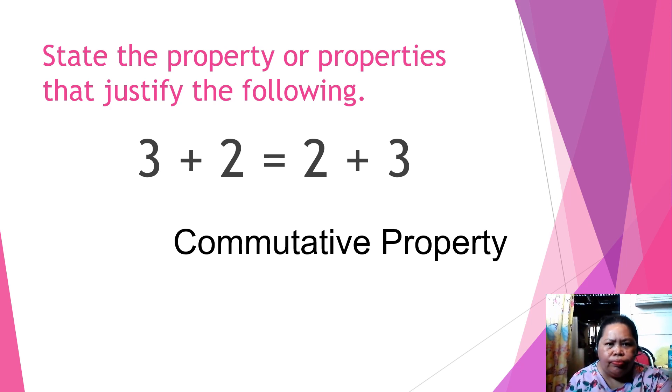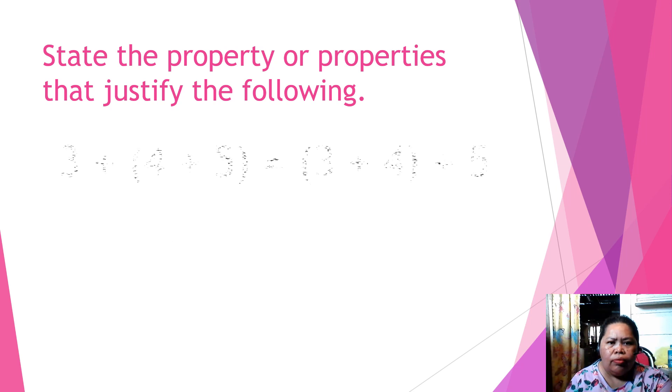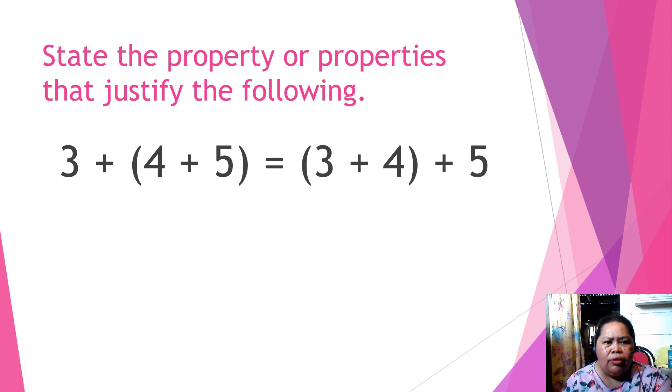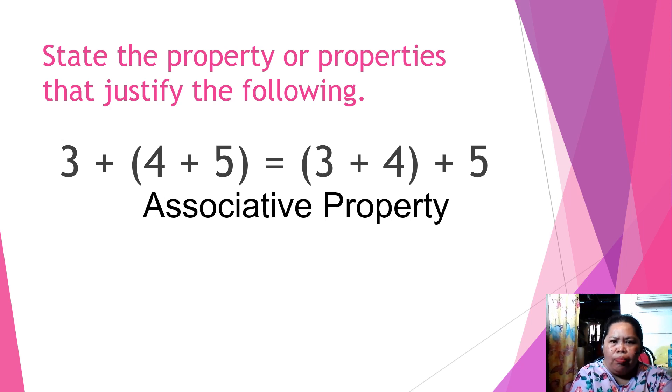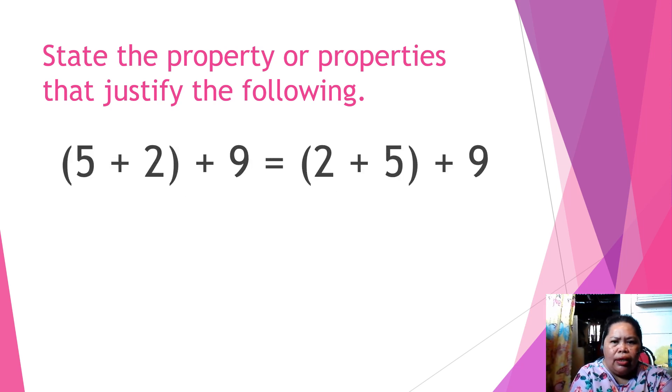State the property or properties that justify the following. We have 3 plus 4 plus 5 is equal to 3 plus 4 plus 5. The answer is associative property.